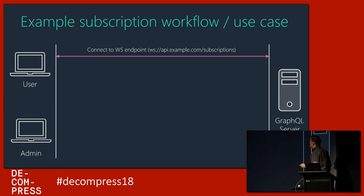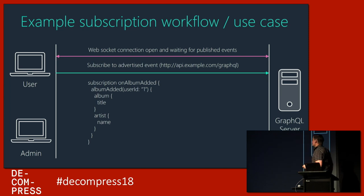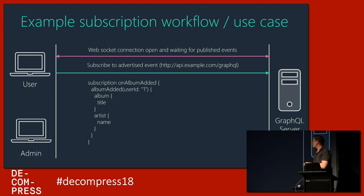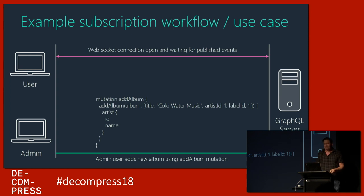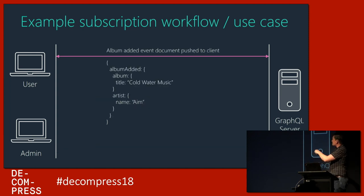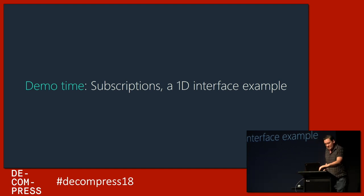Let me clarify the flow with an example. The client opens a WebSocket endpoint — in this case I've called it 'subscriptions' — and issues a subscription query saying: when the album-added event happens, passing in their user ID, they want the title of the album and the name of the artist. Then another user — an admin — adds a new album. Asynchronously, that album-added event with the shape of data the client requested gets pushed back to the user. Let's see that in action.